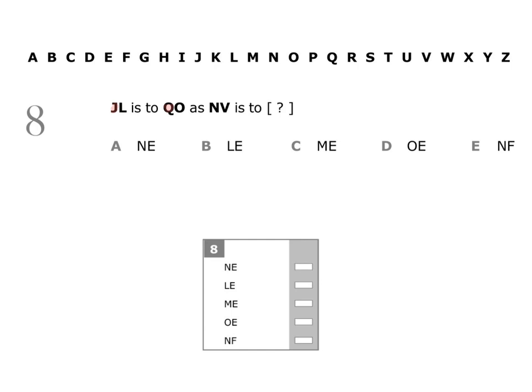How do you get from J to Q? J is here, Q is here, so we need to move on one, two, three, four, five, six, seven letters. Now looking at L and O, L is here, O is here, so we need to move on one, two, three letters.